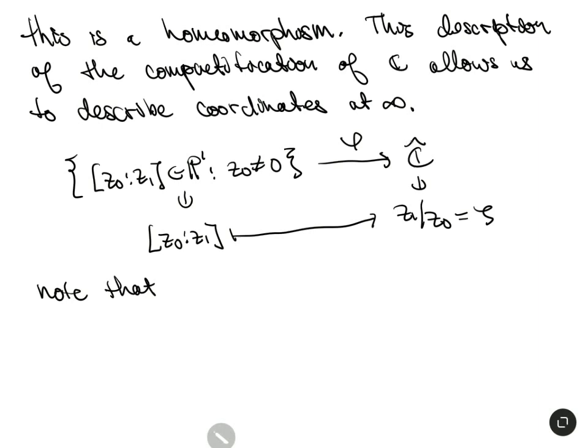Note that φ⁻¹(0) — where ζ = 0 — equals [z₀ : 0] = [1 : 0], which is the point at infinity.